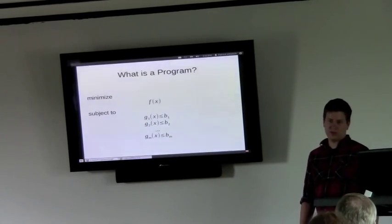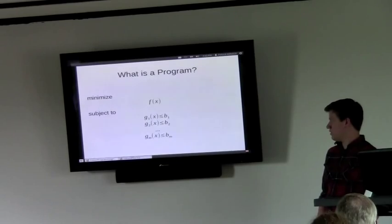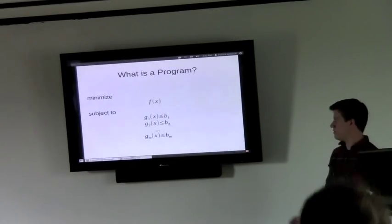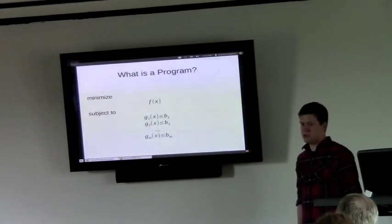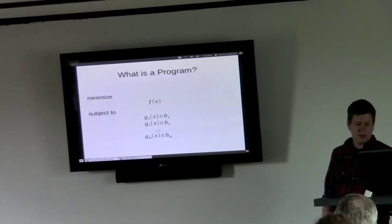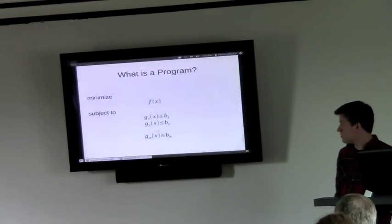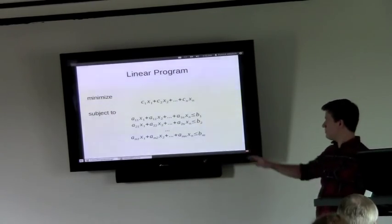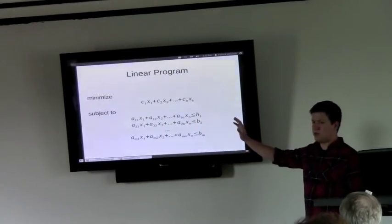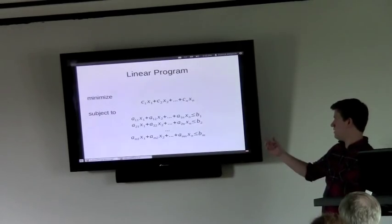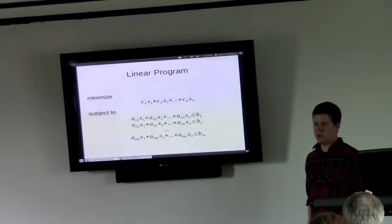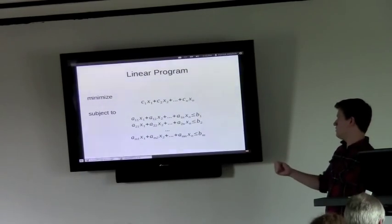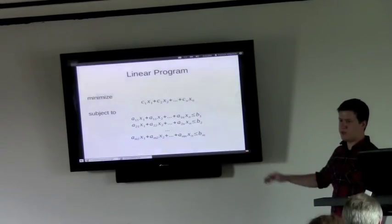But you have limited resources to do that. And so you express your limited resources as constraints, which are shown here as the g functions also on your inputs. And then a linear program is just a special case of this, where the objective function that you're trying to maximize or minimize is a linear combination of the inputs, just a weighted sum. And so are the constraints. It's all just linear combinations.